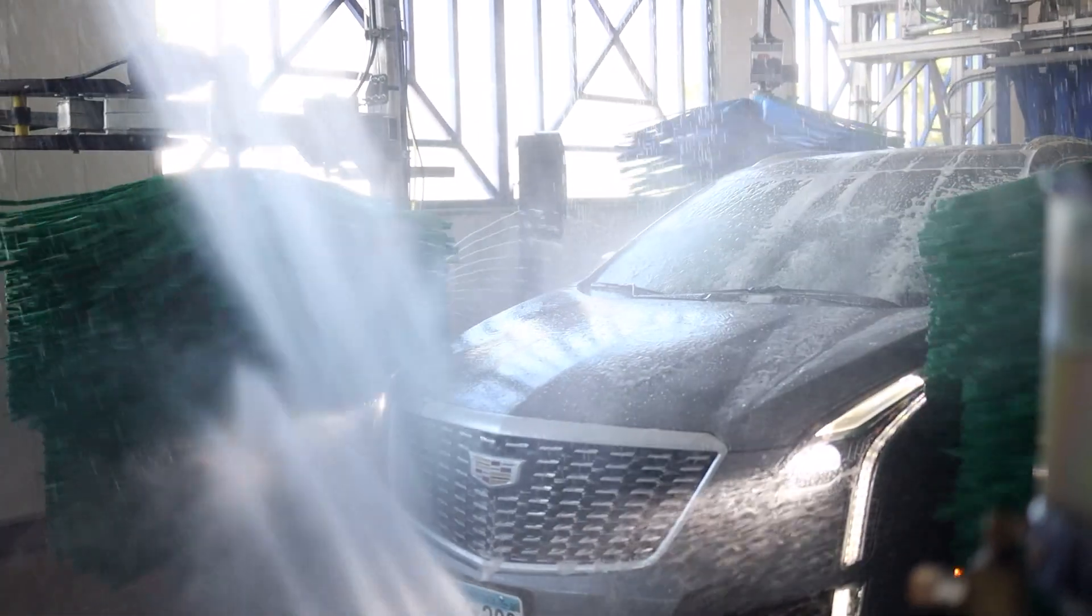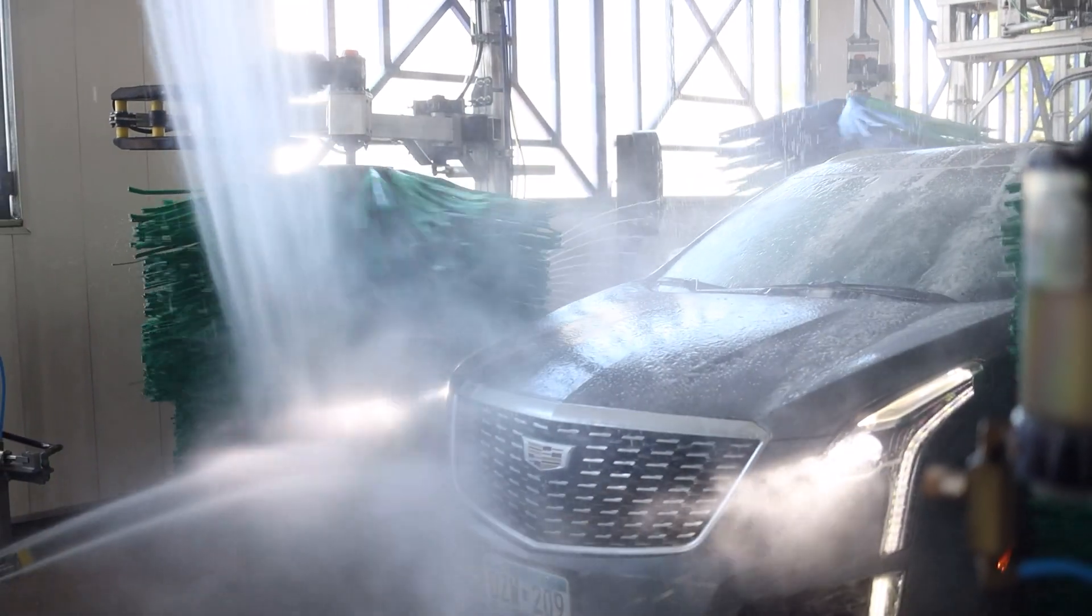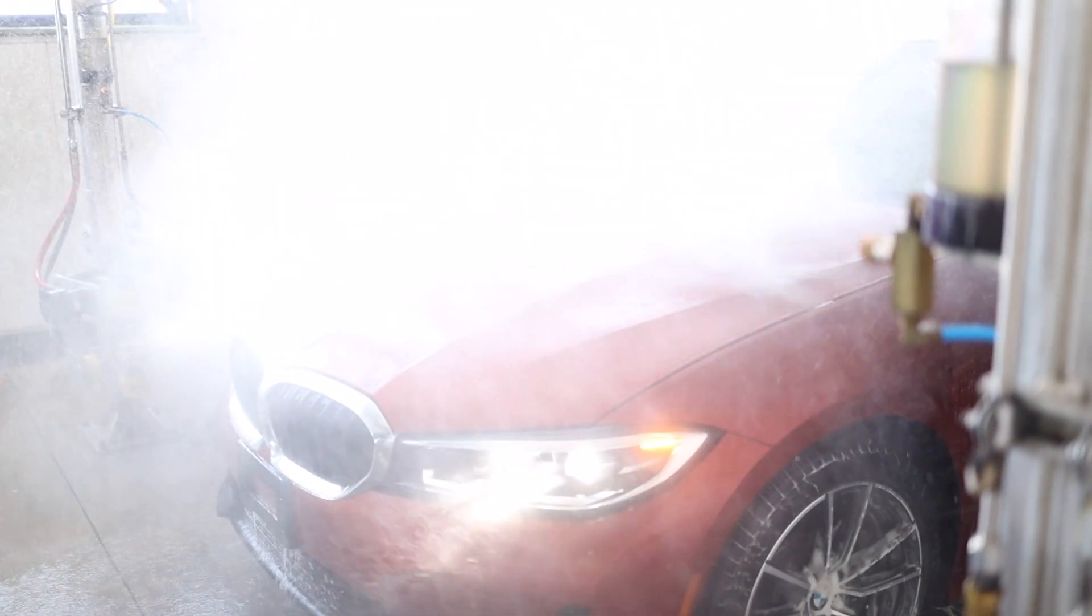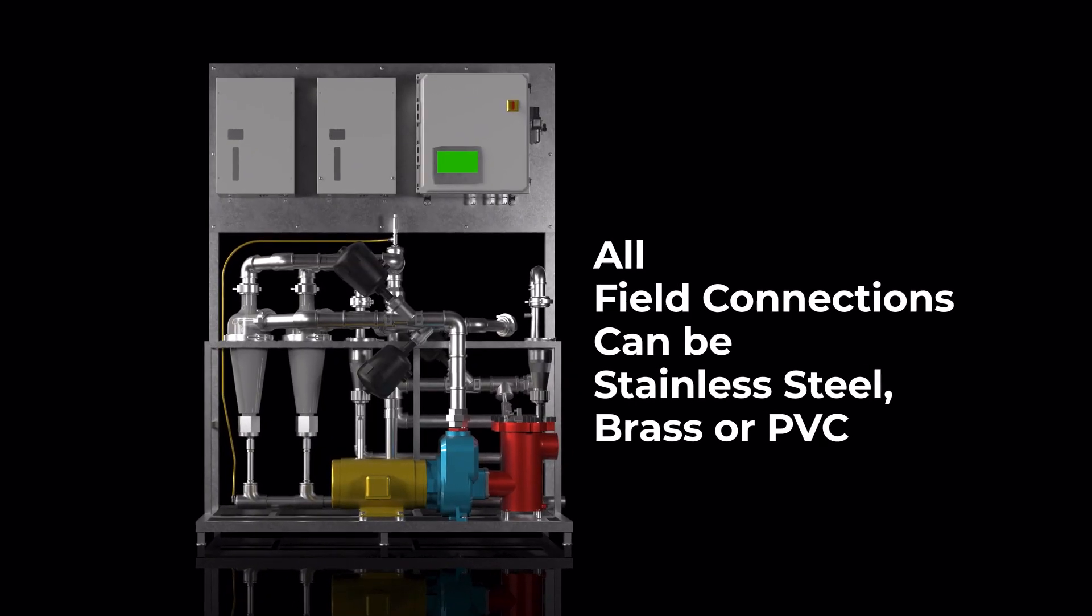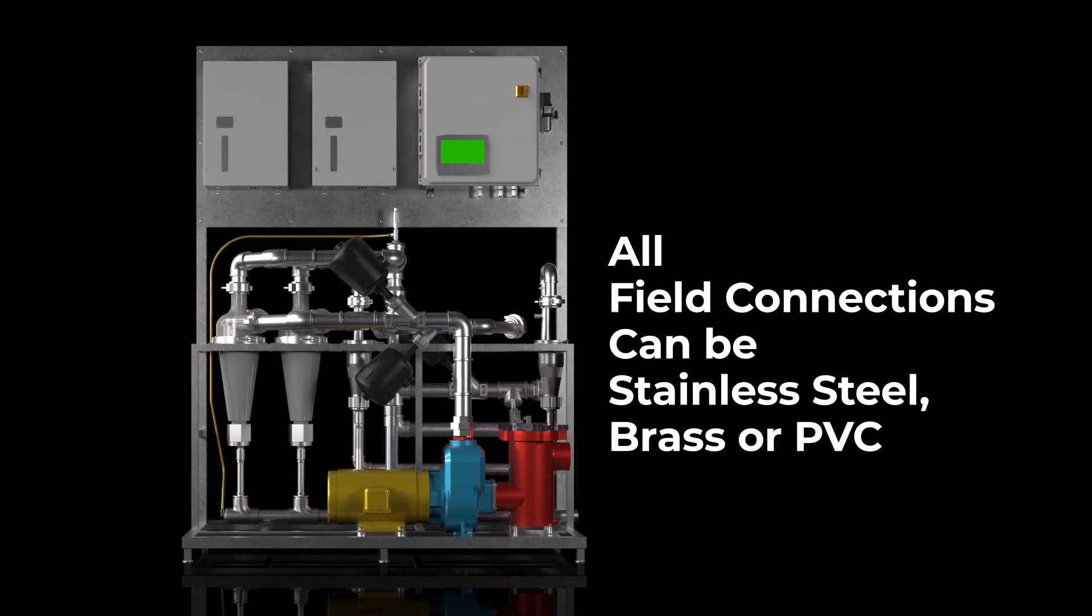The system can send reclaimed water to the car wash equipment and in tunnel applications can flush water to either the trench or the tank for 100% circulation of the tanking. All field connections can be either stainless steel, brass or PVC.